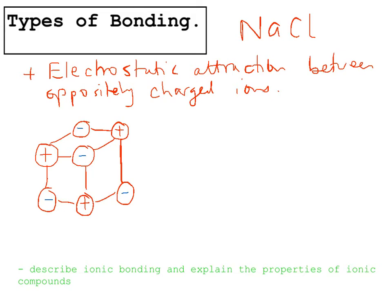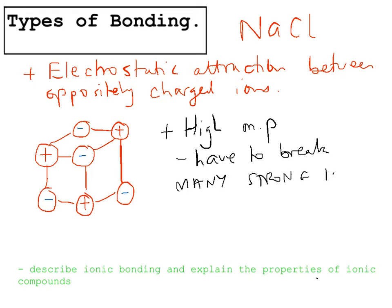Now the properties that ionic compounds show are based on this structure. They have a very high melting point because you have to break all these strong ionic bonds. Because all of the ions are joined to another one, there are many, many of these bonds to break. To melt an ionic compound you have to break a lot of these bonds. To boil it, you'd have to break all of these bonds, which is why more energy is needed to turn to a gas than to a liquid. So there's a high melting point, and this is because you have to break many strong ionic bonds.